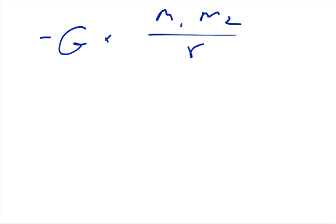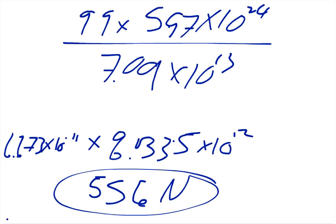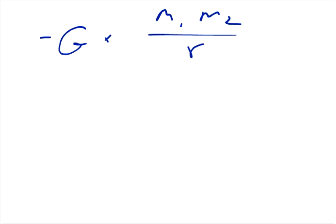and what we just did was negative G times M1, M2 over R squared, so all we have to do now is multiply by the radius, so because we did this one, if we multiplied that by the radius, it would cancel out one of the R's, and it would just leave R,